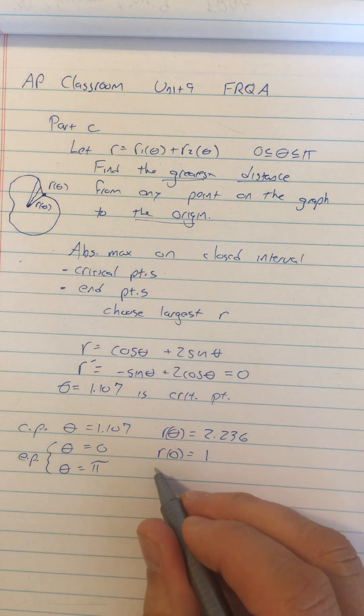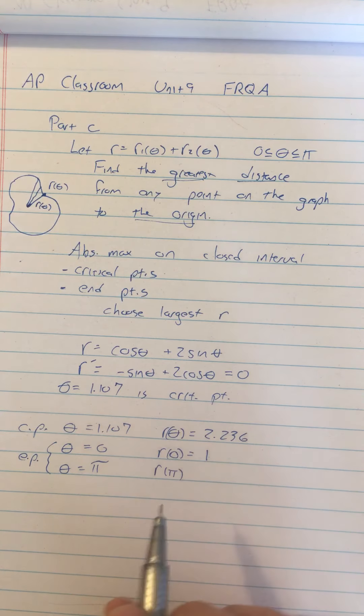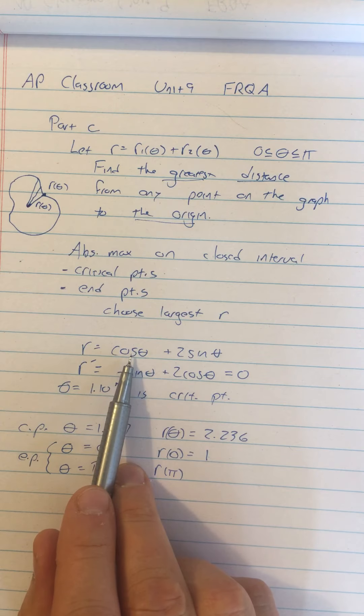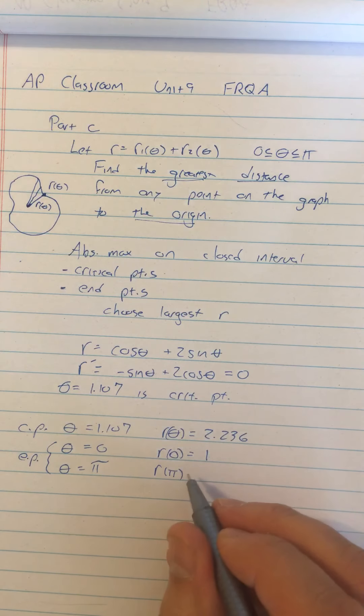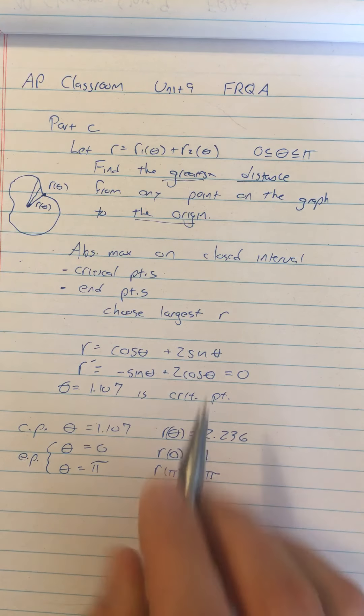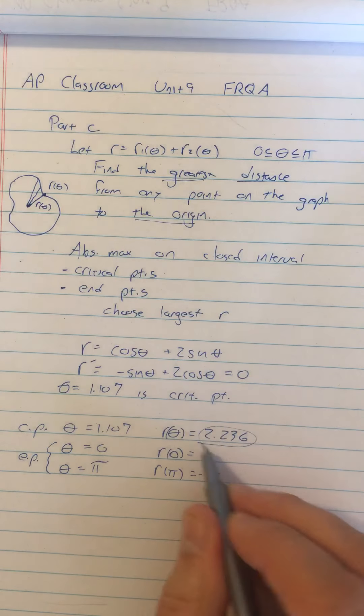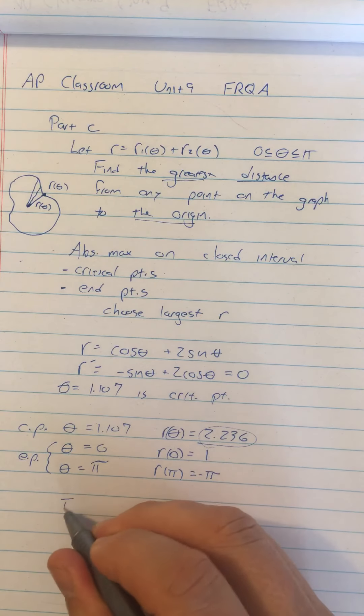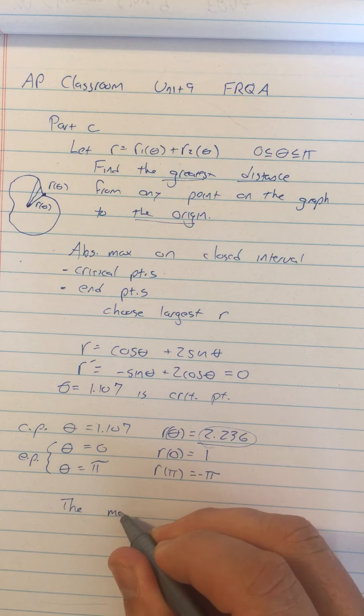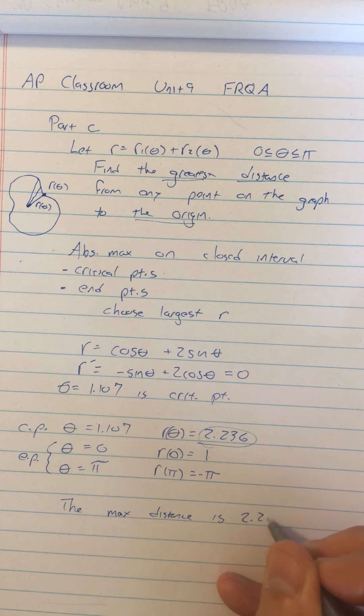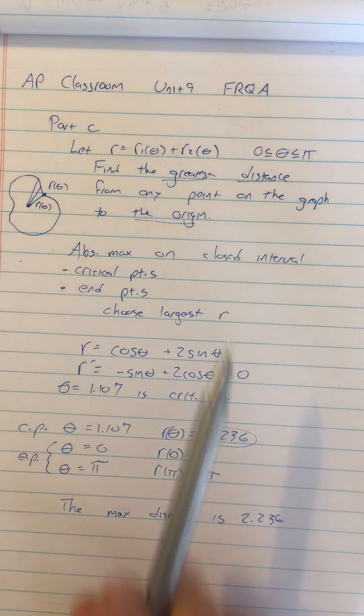And for theta equals pi, R of pi, I have cosine theta is negative one. Two sine theta is still zero. So I have negative one. And since I'm looking for the greatest distance, that's the maximum. I have that right here. So I can say the max distance is 2.236. And I don't even have to do a derivative test on this because I have a closed interval. There are no other critical points than 1.107. There are no other endpoints. This is the largest value there is. So it's a maximum.